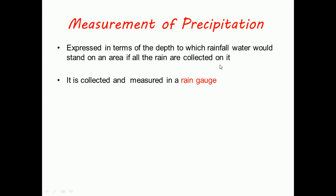Measurement of precipitation. Precipitation is expressed in terms of the depth to which rainfall water would stand on an area if all the rain is collected on it.